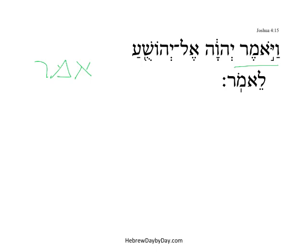What we have is a Kal, Vav-consecutive, imperfect, 3MS. The way these are formed, of course, is the imperfect form with a Vav Pataḥ added to the front of it and a Dagesh in the first root letter. That's why we have the Dagesh in the prefix pronoun of Vayomer.